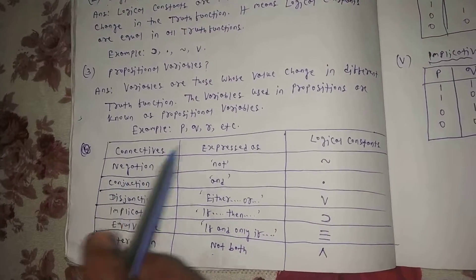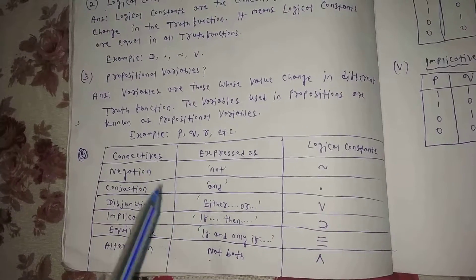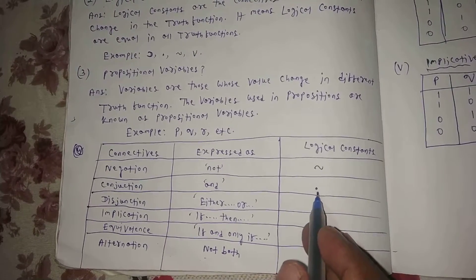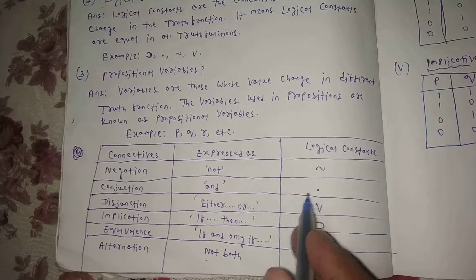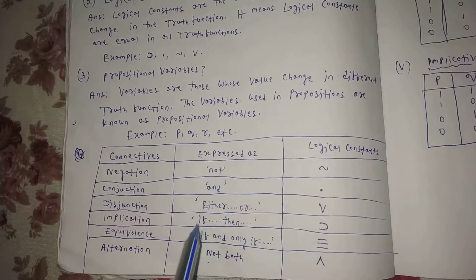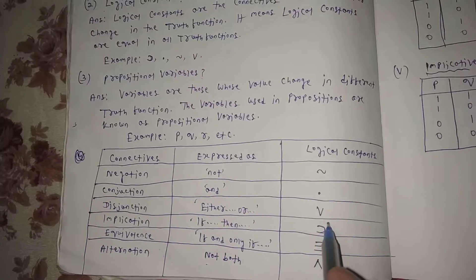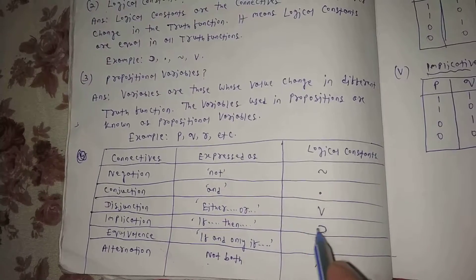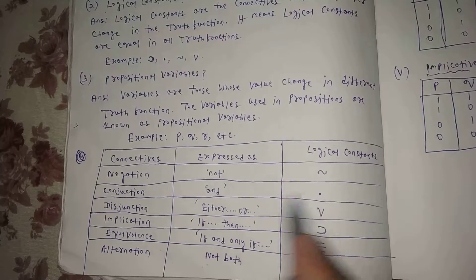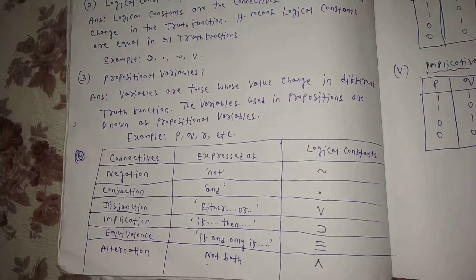Conjunction means 'and.' Its logical constant symbol is a dot. Disjunction is expressed as 'either…or,' and its logical constant is the wedge mark — the mark of disjunction.